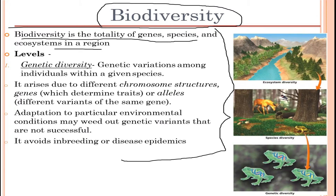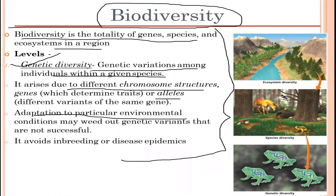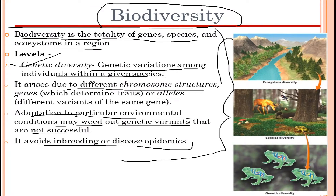There are some levels of biodiversity. The first is genetic diversity, which is genetic variation among individuals within a species. It arises due to different chromosome structures or alleles, and also due to adaptation to particular environmental conditions, which may weed out genetic variations that are not successful. It also avoids inbreeding or disease epidemics.